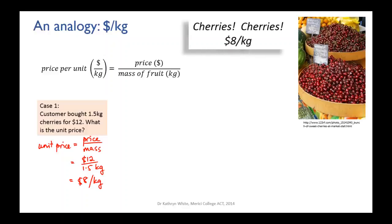Then there's the case where you, as the stallholder, can use that relationship to work out how much a customer must pay. Say someone wants 2.4 kilos of cherries, so you have to work out the price. You rearrange that relationship, and the price that they need to pay equals the unit price times the mass of fruit that they're going to buy. So the unit price is $8 per kilo times 2.4 kilos, which equals $19.20. That's the second case where you'd use this relationship.